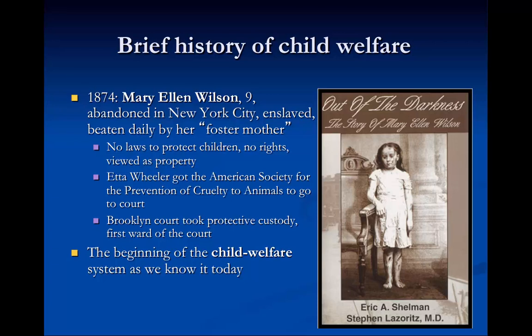Our modern day child welfare really came out of the case of a girl named Mary Ellen. She was nine years old in 1874, she was abandoned in New York City, and then she was taken in by a foster mother who beat her on a daily basis and tortured her. At that time there really were no laws in place to protect children — children were seen as property and didn't have rights. In fact, there were more laws on the books related to animal cruelty than to child cruelty, and that's an important piece of history: the early child welfare laws came out of animal cruelty laws. That's how the beginning of the child welfare system was really born, over concern for child well-being and child maltreatment.